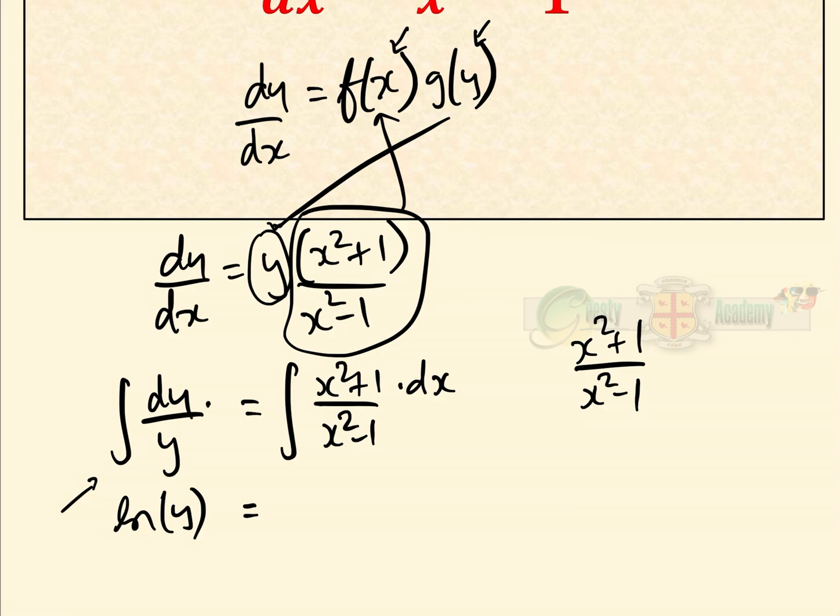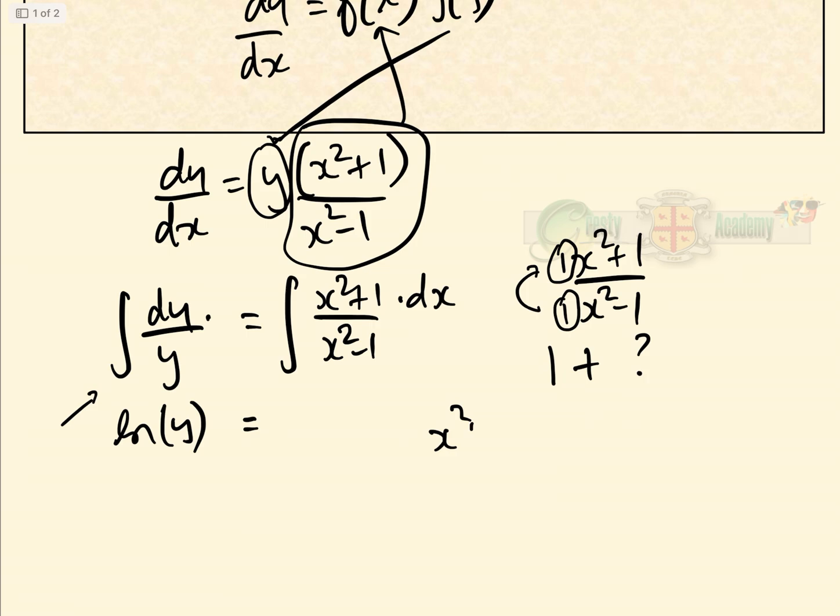But because the coefficient of this is 1 and the coefficient of this is 1, we know that when we divide one by the other we're going to get 1 plus something. Therefore, we can rewrite (x² + 1)/(x² - 1) as (x² - 1 + 2)/(x² - 1).